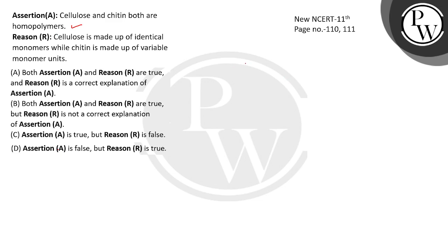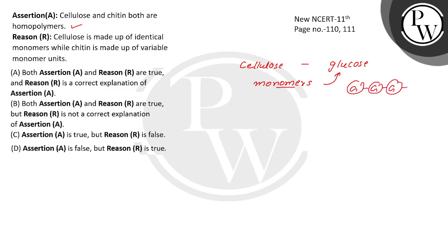If we talk about cellulose, then who is the monomer unit? Glucose — we will get the same type of monomer. The monomer is just glucose. If we write glucose, glucose, glucose — this is the long chain, and what will become? A polymer. Because the monomer unit is the same, we will say homopolymer.